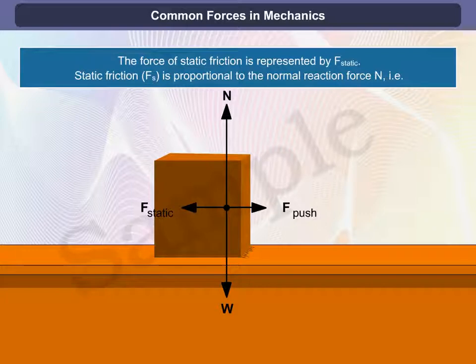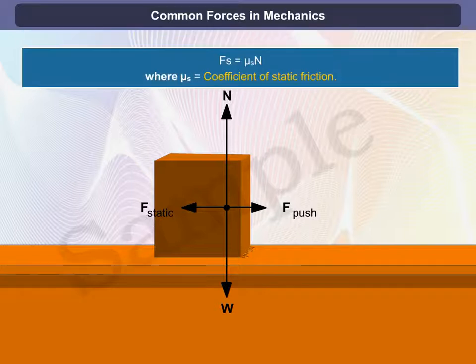Static friction fs is proportional to the normal reaction force N. That is, fs equals μs times N, where μs is the coefficient of static friction.